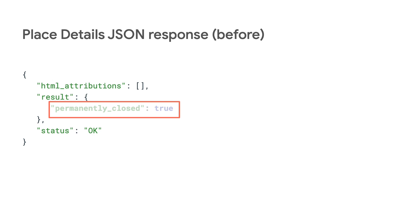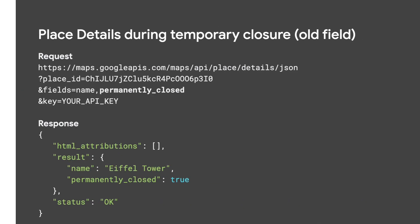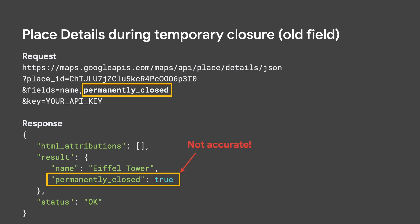If that field wasn't marked true, it might mean that the business was operating, or it might just mean unknown. We couldn't represent a temporary closure or even distinguish between whether we knew a business was operating versus if we just didn't have information about that business's operational status.